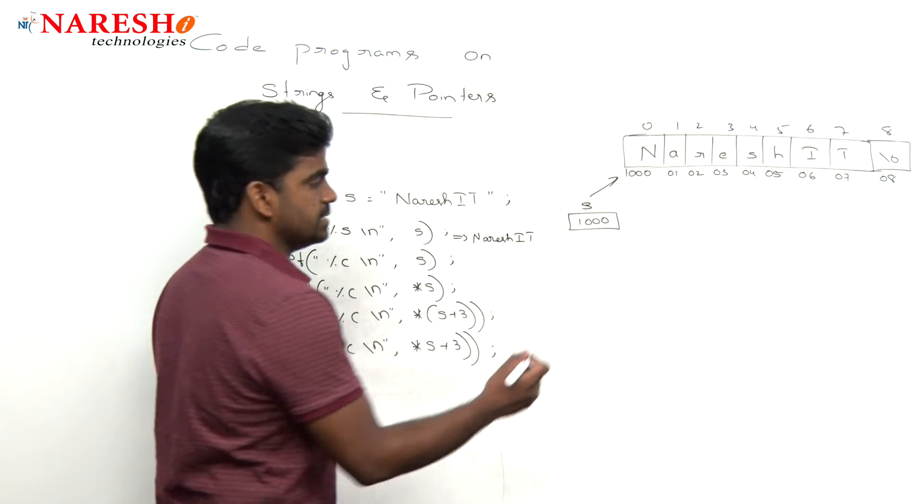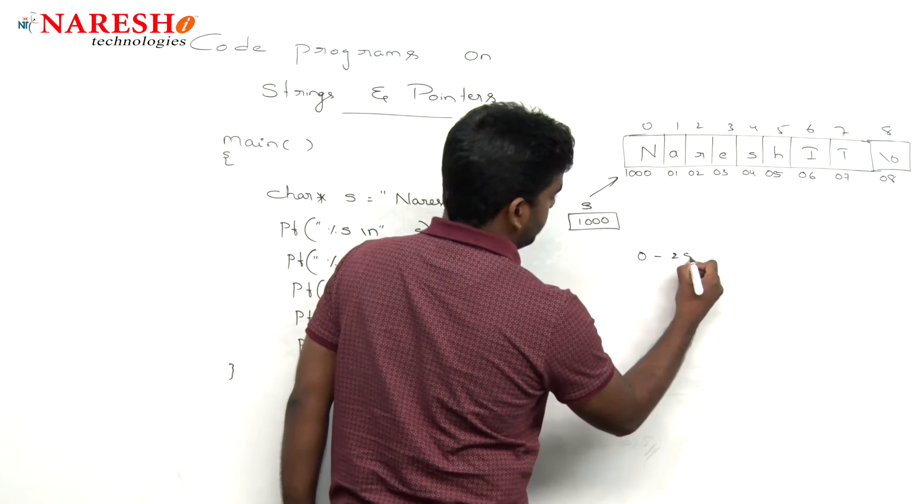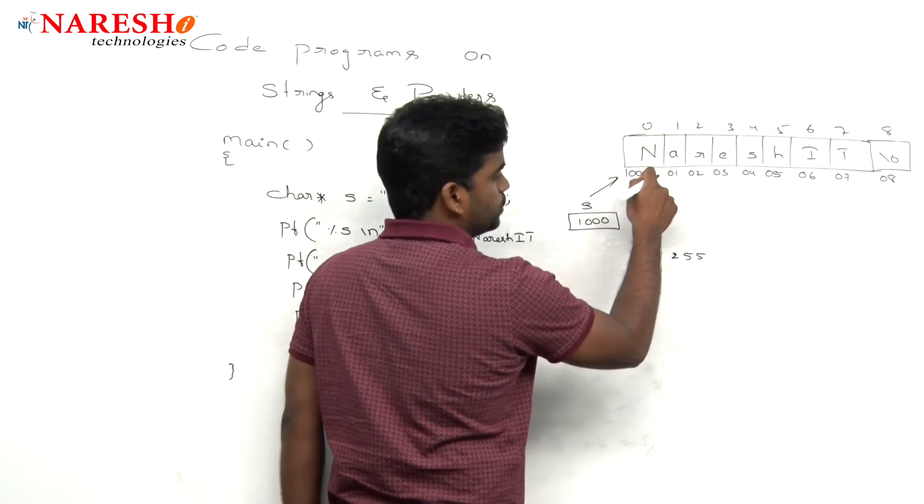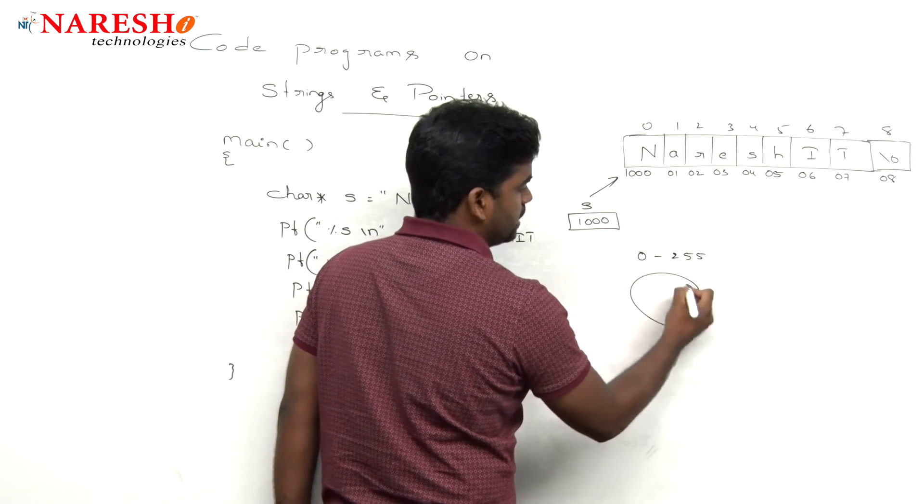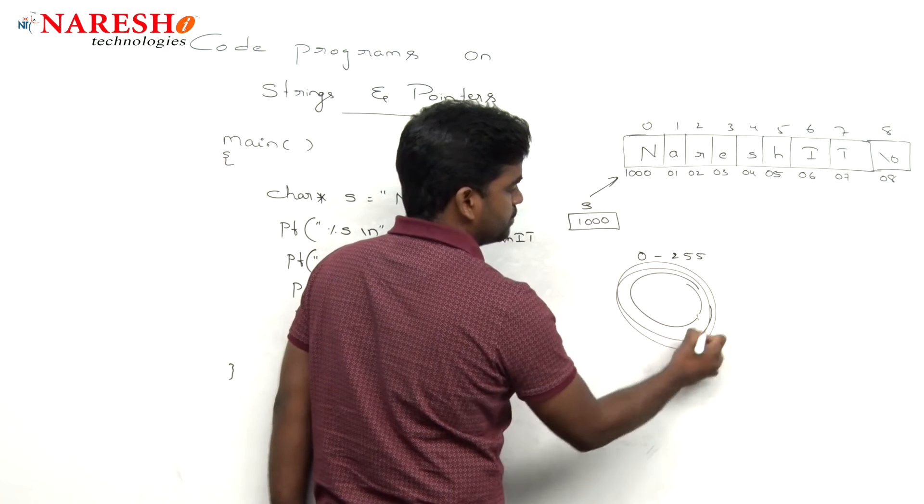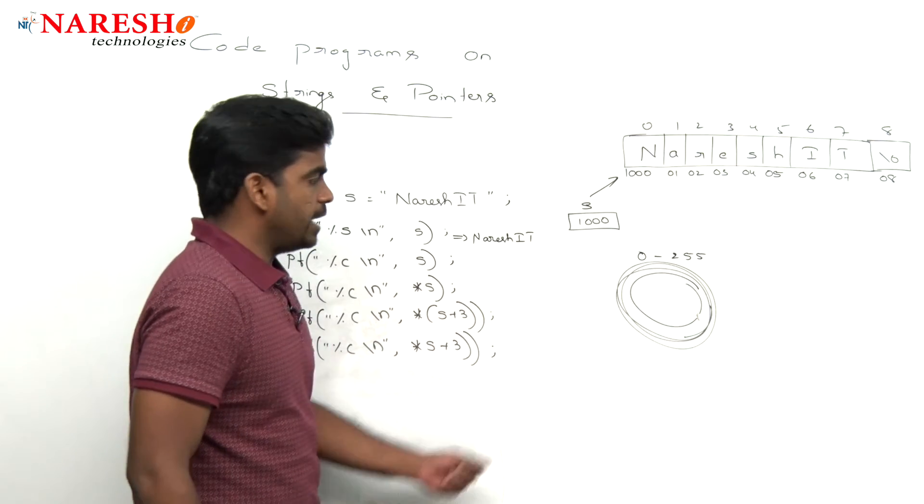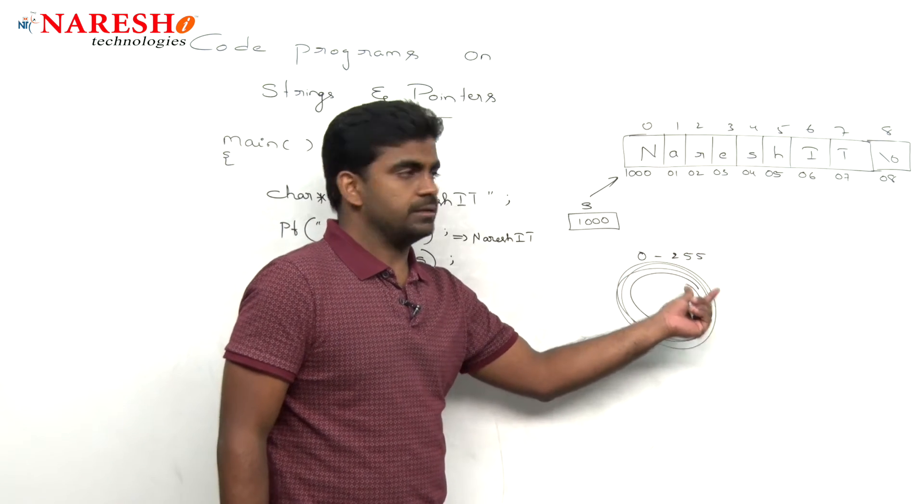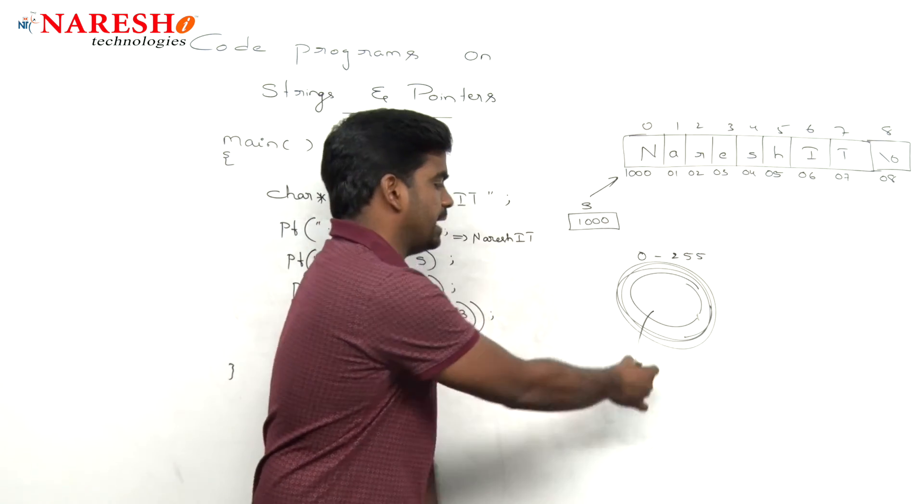See here, the ASCII set is 0 to 255. And this value 1000, it will count continuously and one final value will be displayed. That address is equal to some character.